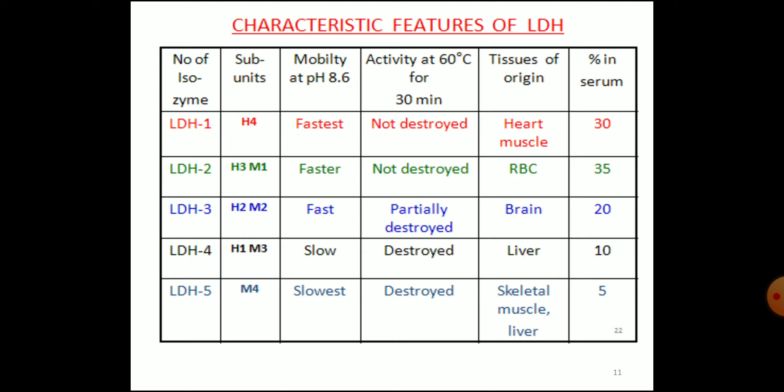All forms are seen in all persons. In this table, you can see various forms of LDH. LDH1 is H4, fastest moving at electrophoresis at pH 8.6, not destroyed at 60°C for 30 minutes — it is heat stable — tissue of origin is heart, and constitutes 30% of total LDH. LDH2 is H3M1, faster moving, not destroyed by heat, present in RBC, constituting 35% of total LDH.